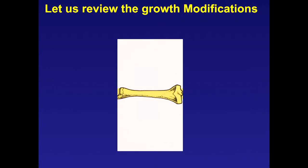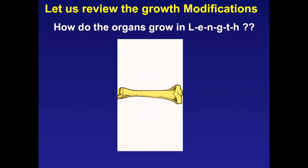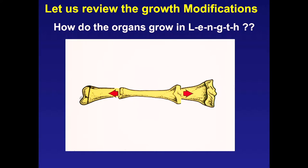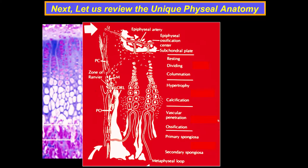Let's look at the unique physio-anatomy. We'll look at each part of the physis—the so-called epiphyseal plate or growth plate. The best technical term is 'physis,' which comes from the Greek word meaning 'to produce.' On the epiphyseal side, the blood supply comes in, which is very critical.